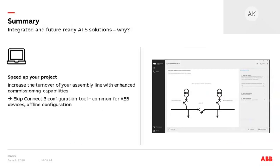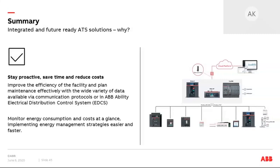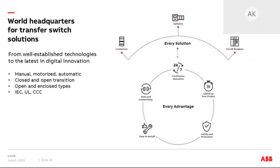With new generation ATS solutions, it will take less time to commission the ATS and put it into operation compared to conventional solutions. Integrated and future-ready ATSs improve the efficiency of the facility and allow you to plan maintenance effectively, thanks to the wide variety of data available via communication protocols or in ABB Ability EDCS — ABB's cloud platform. Data you may receive from the devices includes current, voltage, power, energy, total harmonic distortion, temperature, contact wear, and other diagnostics. ABB offers not only modern ATS solutions but also well-established and proven ones — ABB has a wide portfolio that includes ATSs from 1A up to 6300A based on circuit breakers, switch technology, and contactors.